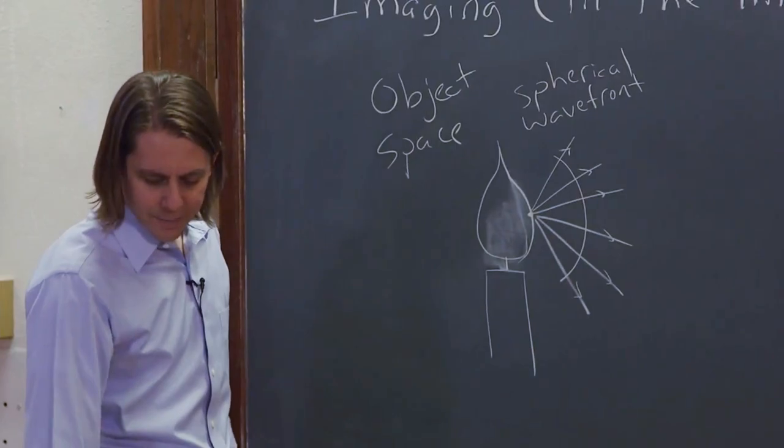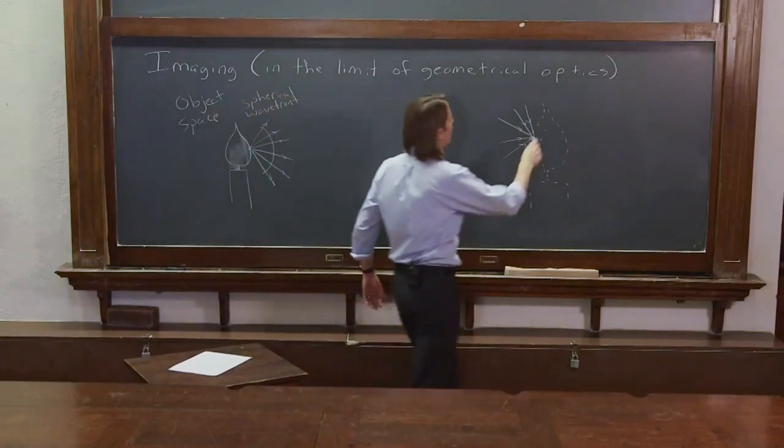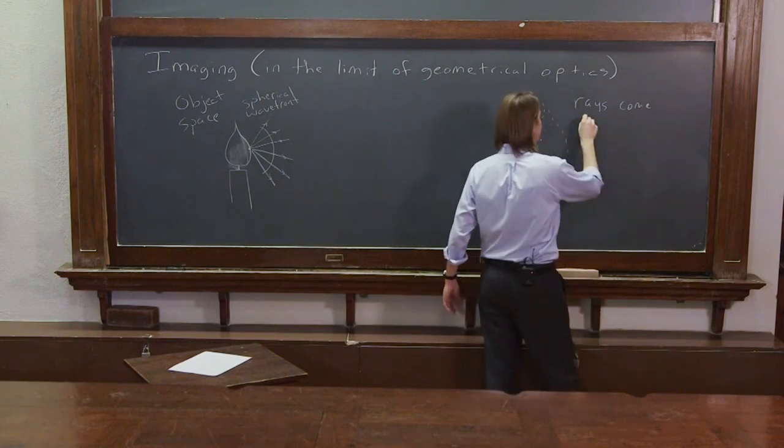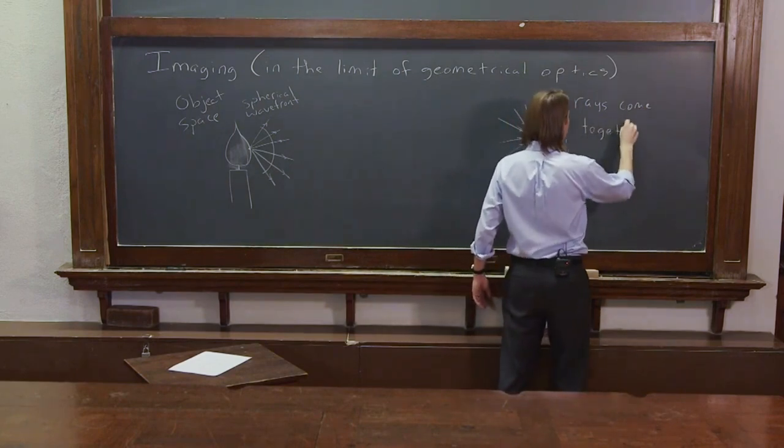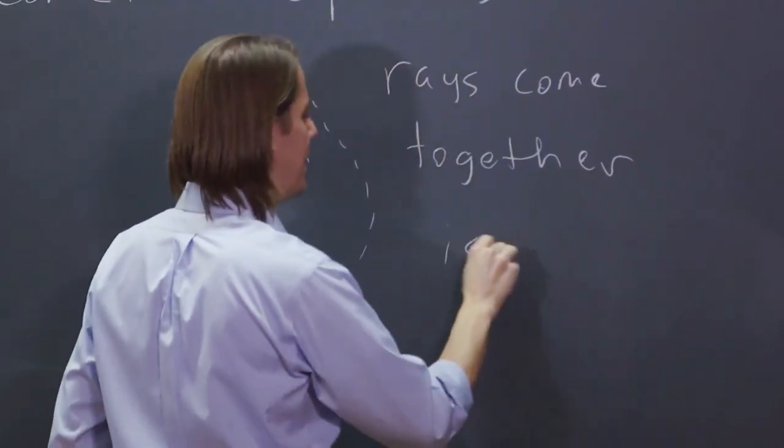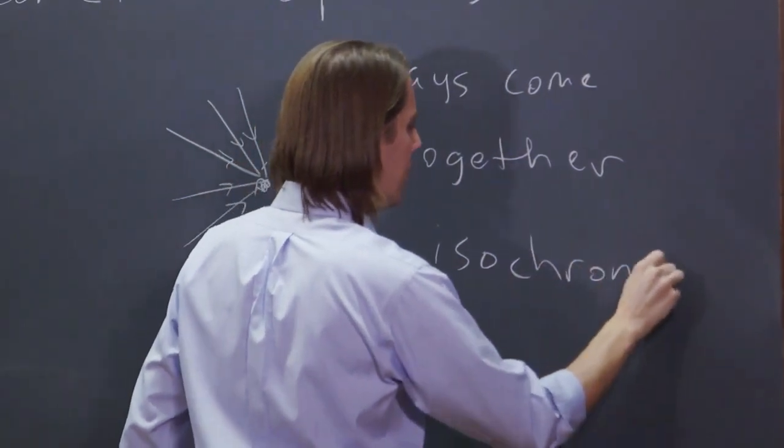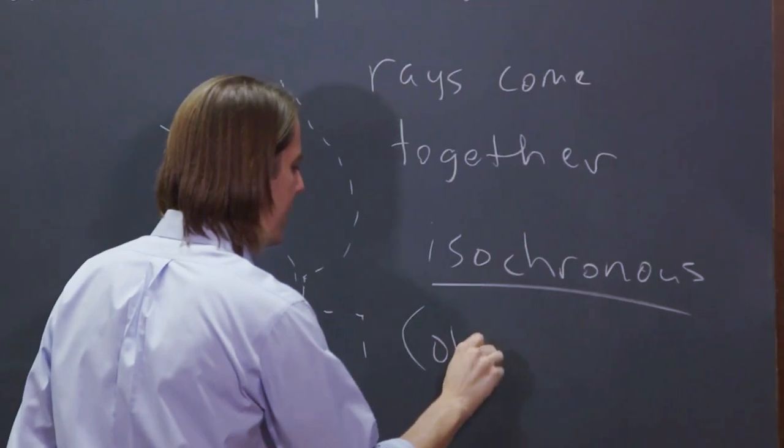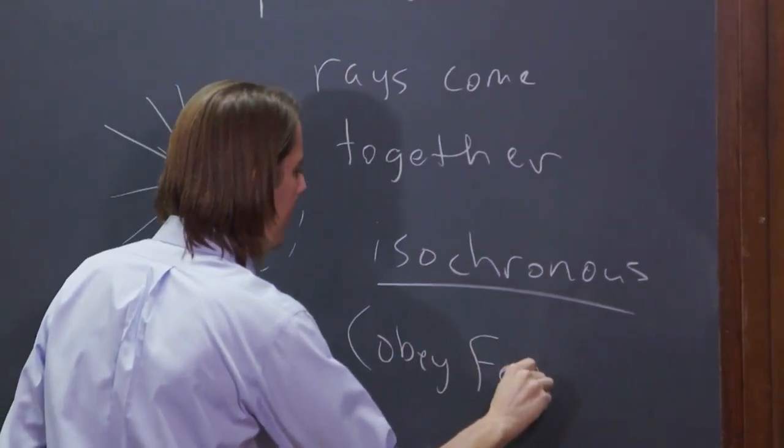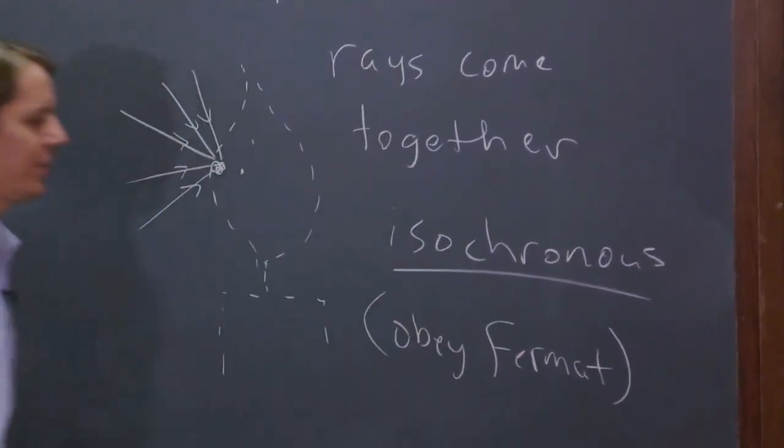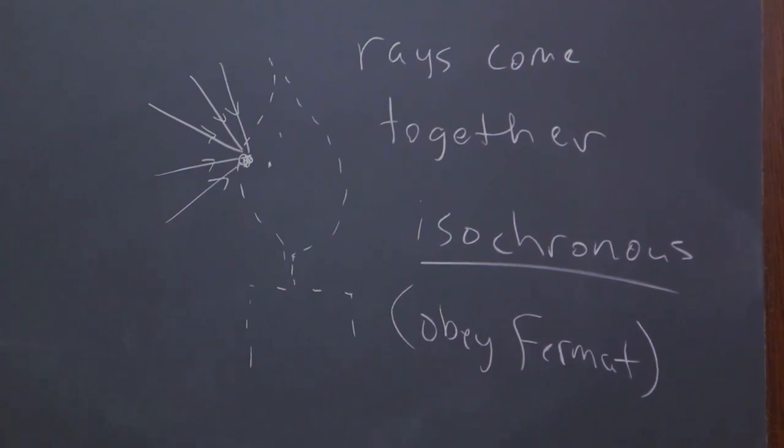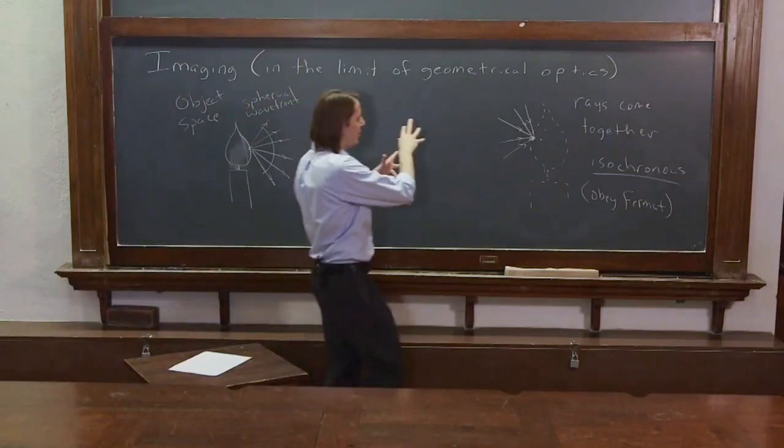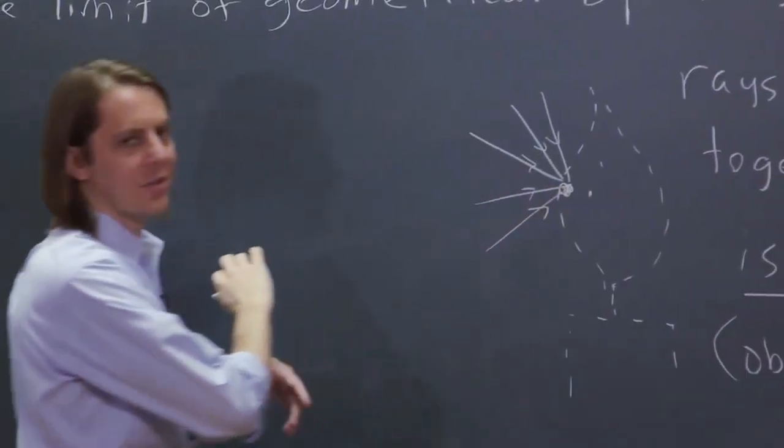And the key is that the rays come together and in geometrical optics they have to be isochronous. Basically they obey Fermat. They obey Fermat. What it means is all the rays that come off this point that want to come together and make an image at this point, they have to take the same amount of time.